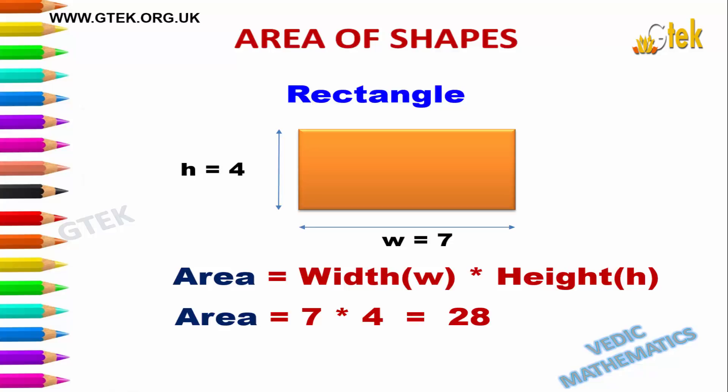The area of rectangle is calculated as width into height. With our example, the values are 7 and 4. So area of rectangle equals 7 into 4, which equals 28.